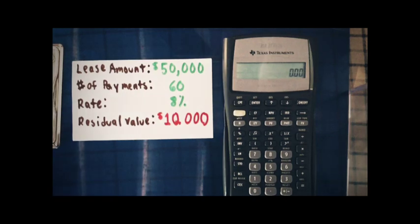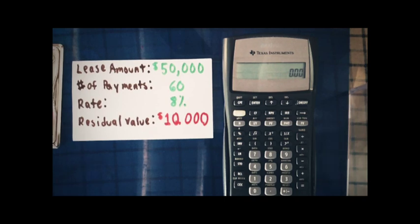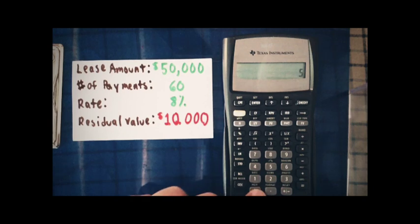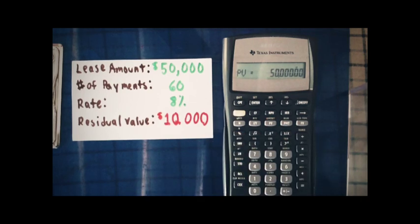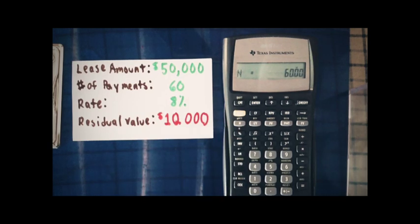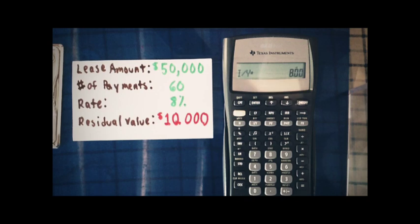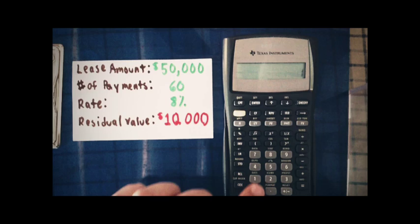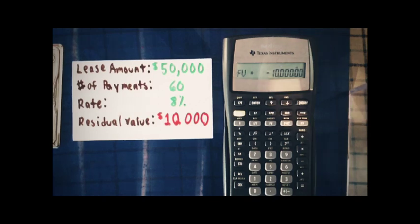This is a straightforward lease — no payments in advance, no payments at the beginning of each period, no odd periods. So, we're going to store $50,000 into present value, 60 into N, and the annual rate is 8% into I/YR. The residual value we're going to enter as a negative number — negative $10,000 — and put this into the future value register.